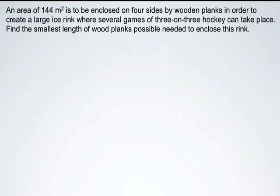Now we have a similar example here where we have a fixed area of 144 meters squared, and we have wooden planks that are going to create a large ice rink where there's going to be some 3-on-3 hockey being played. We need to find out the smallest length of wood that needs to go around the outside, so the minimum amount of planks possible to create this rink, which has a fixed area of 144 meters squared.